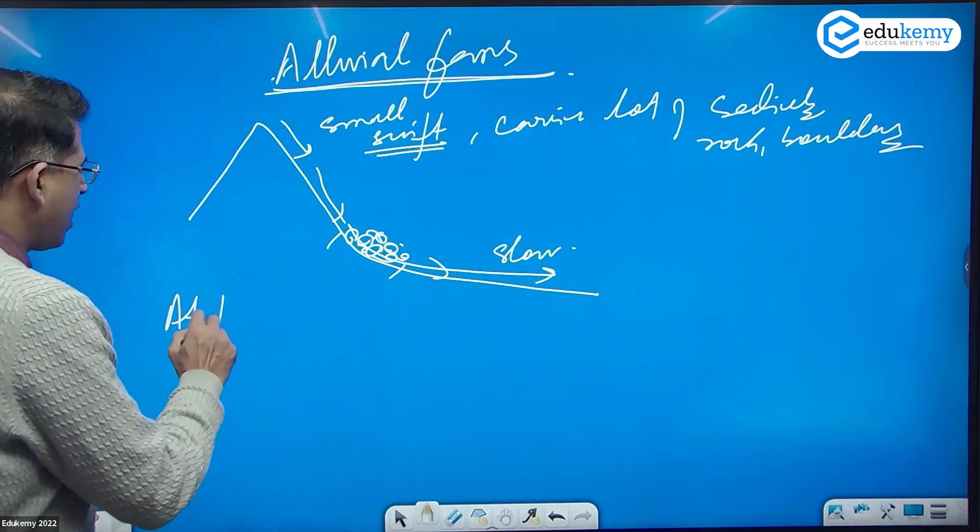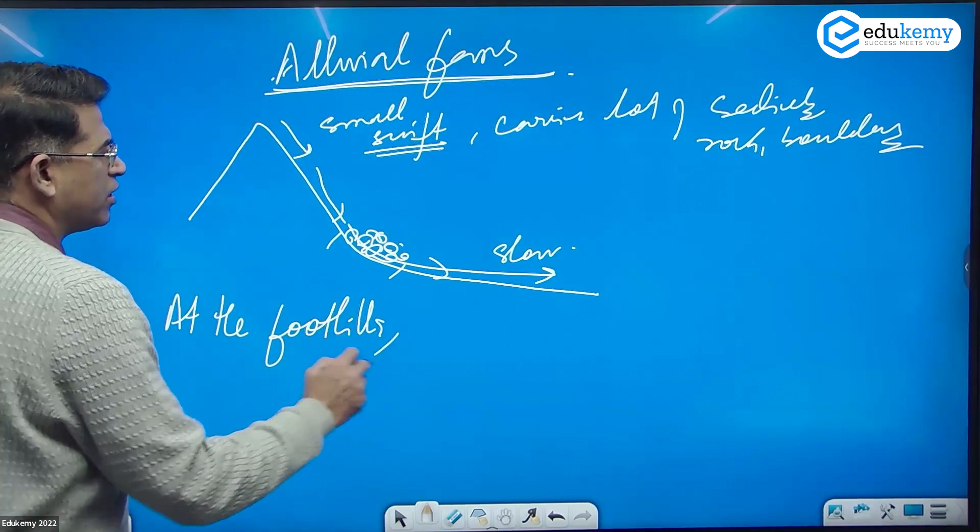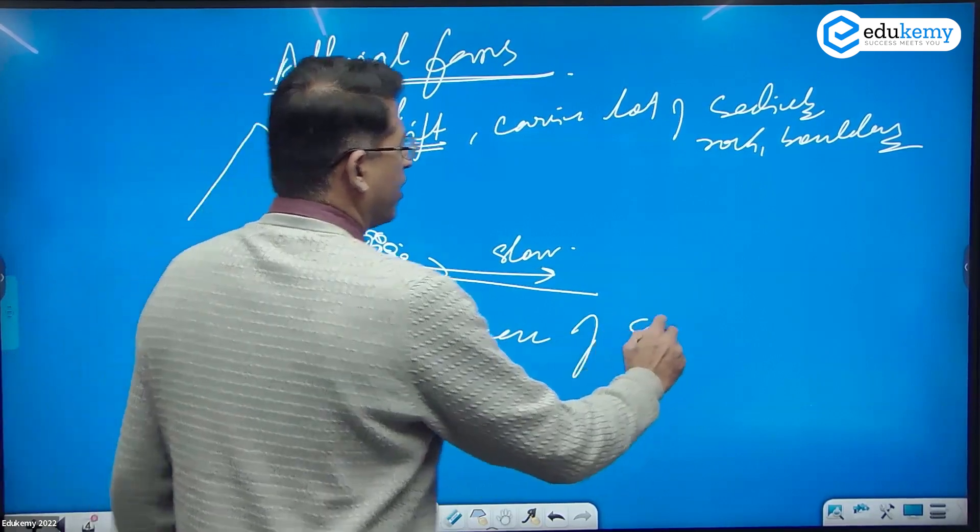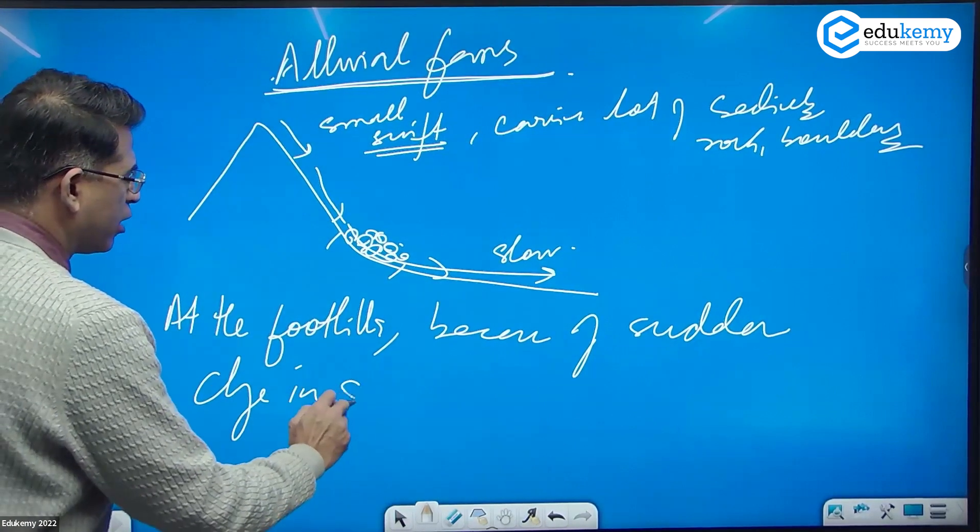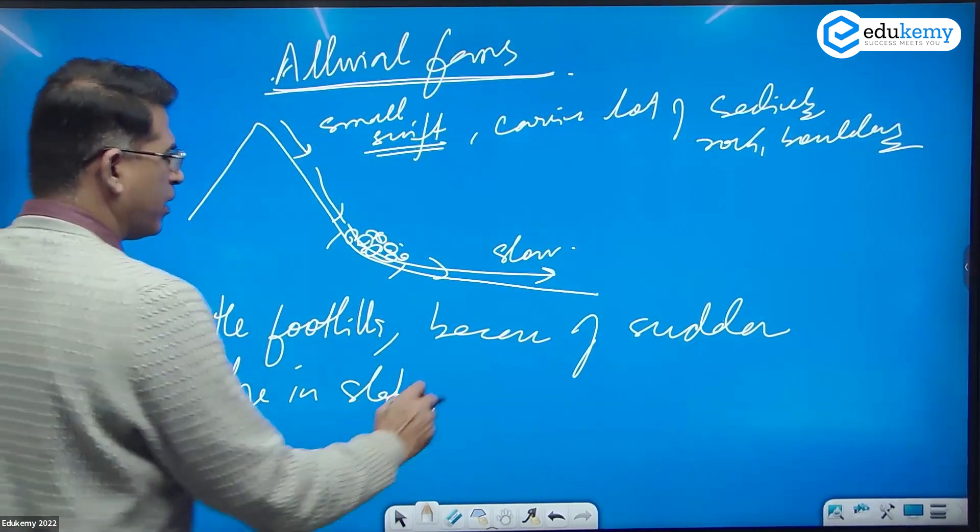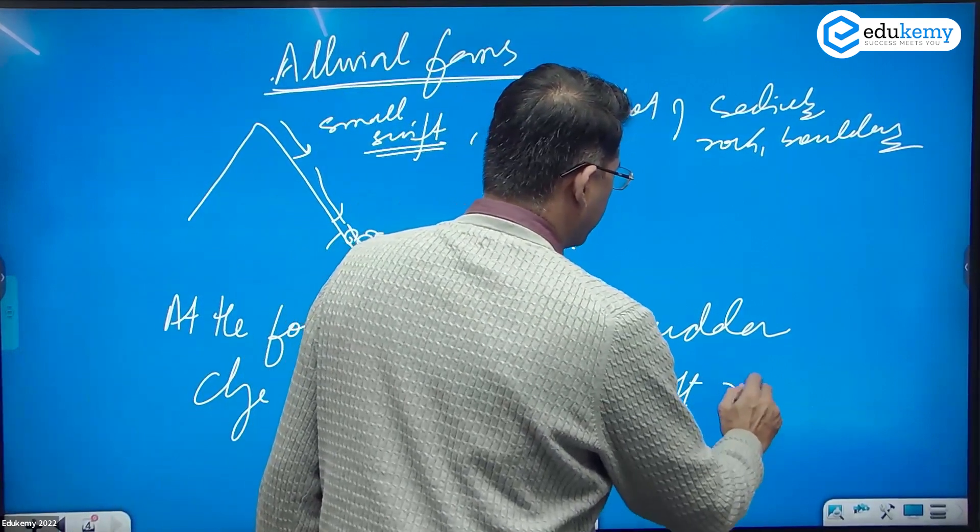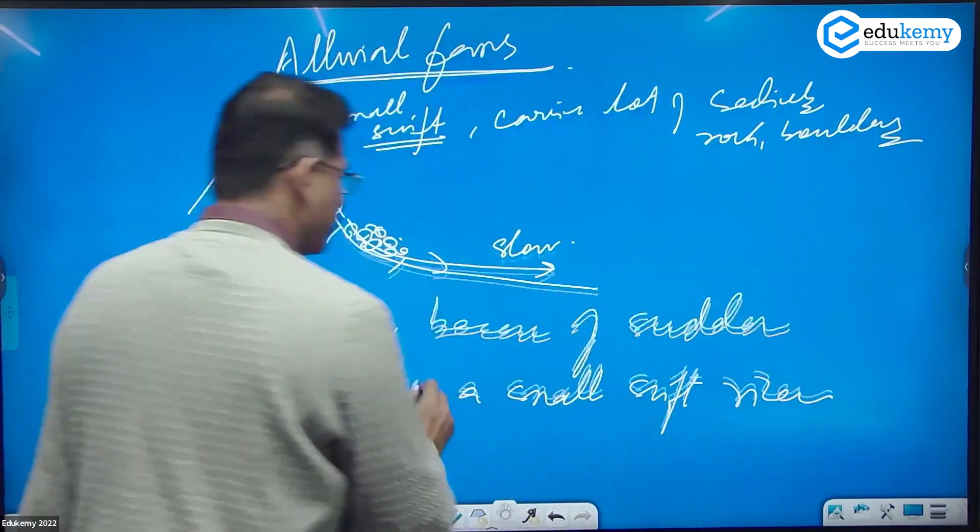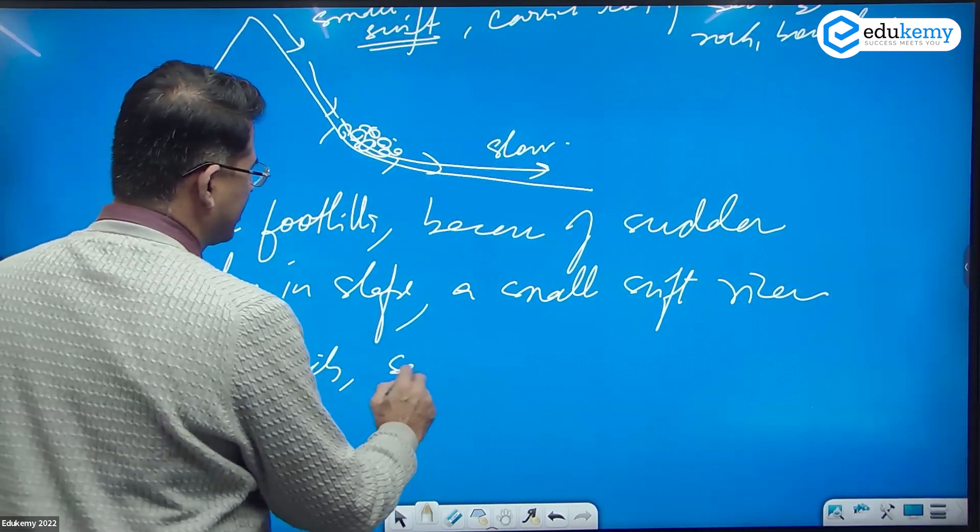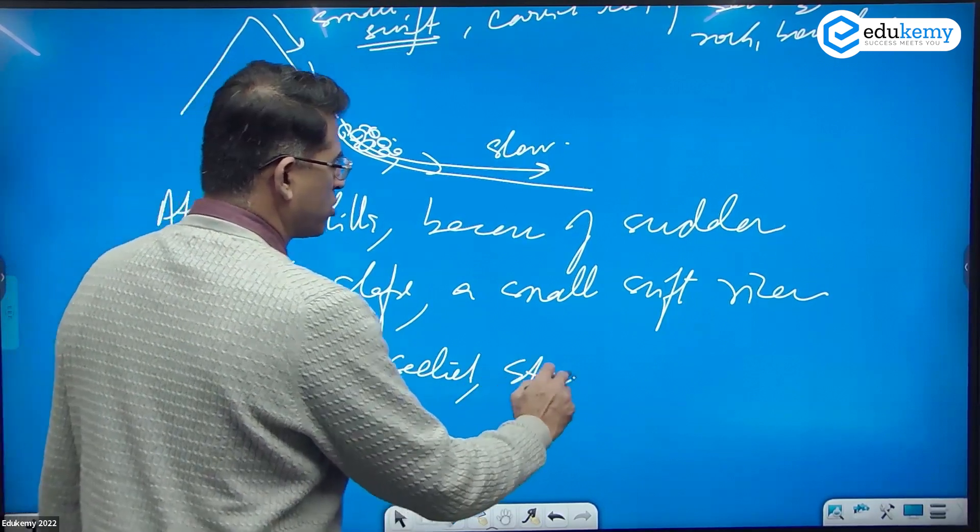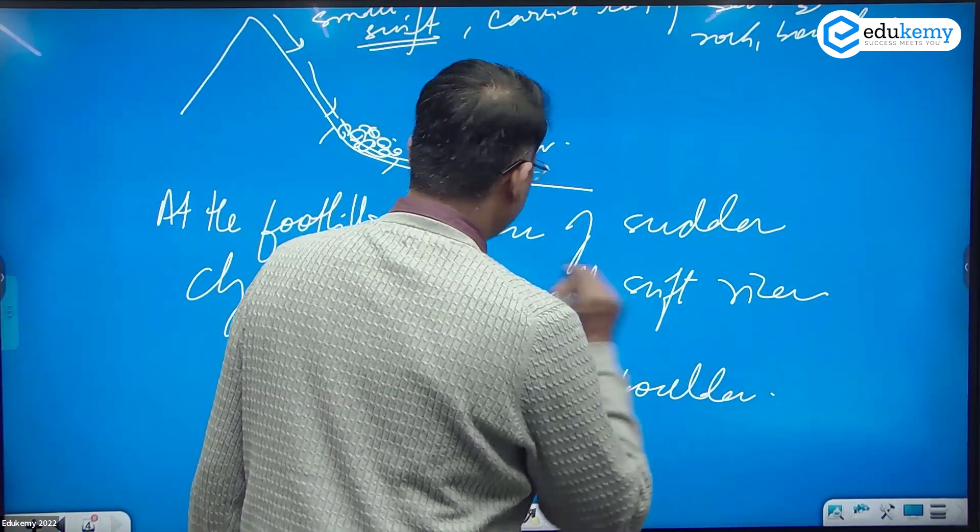At the foothills, because of sudden change in slope, a small swift river deposits sediments, stones, and boulders.